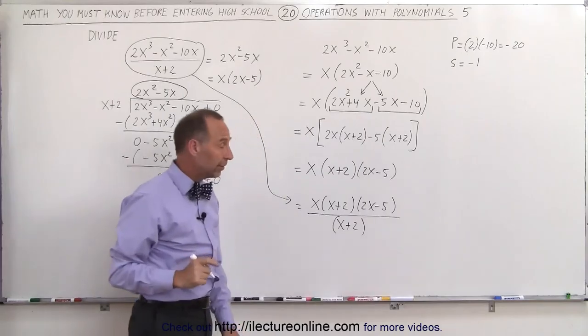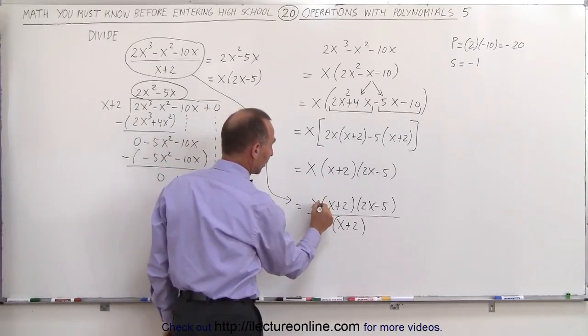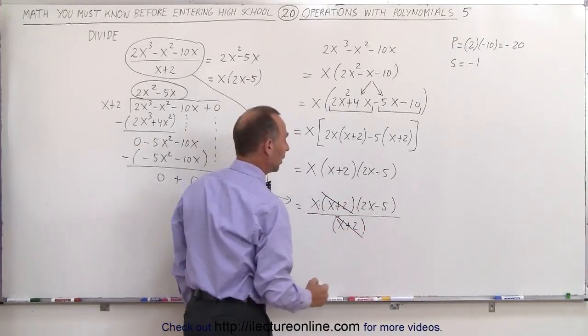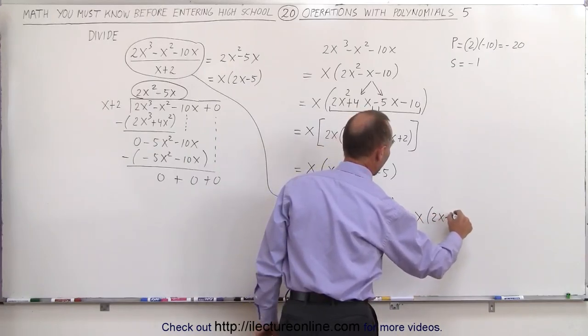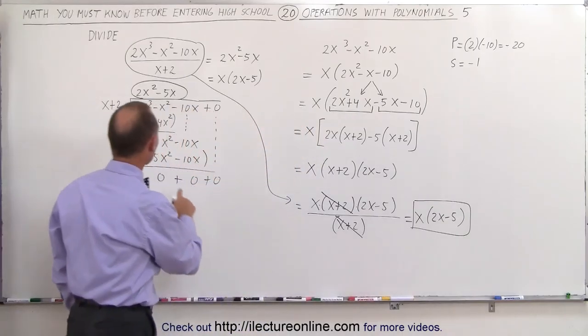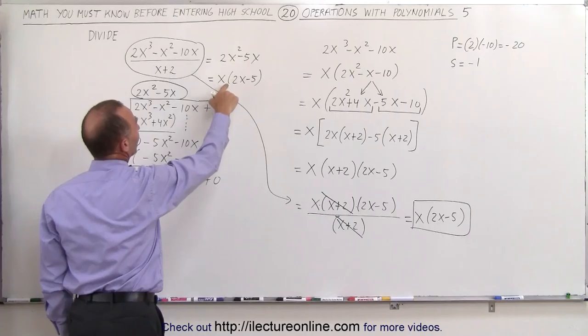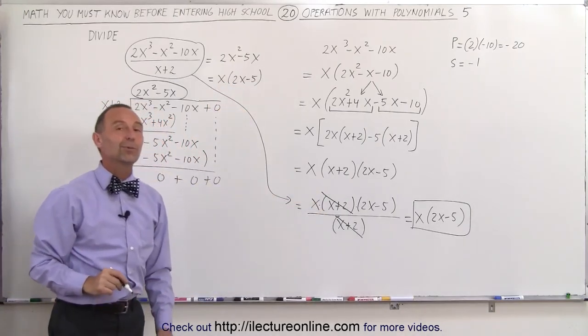But notice now that in the numerator, I have an x plus 2. In the denominator, I have an x plus 2. Since this is multiplied here, I can then divide the x plus 2 and the x plus 2, and I'm left with an x times a 2x minus 5, which should be the very same result that we got when we did the longhand division. And here we have 2x squared minus 5x, which can be factored to be x times 2x minus 5. And you get the same result.